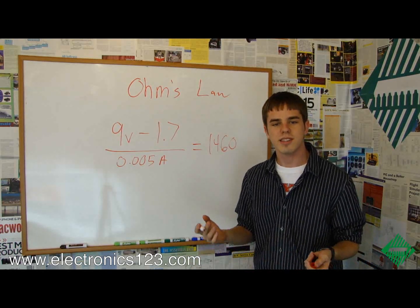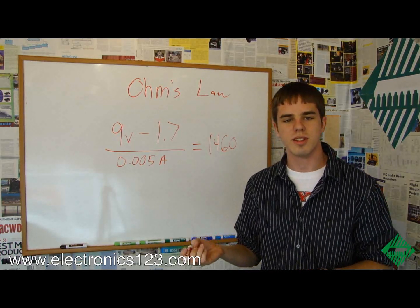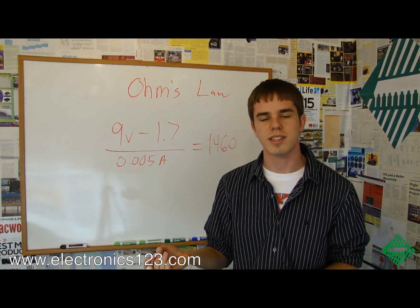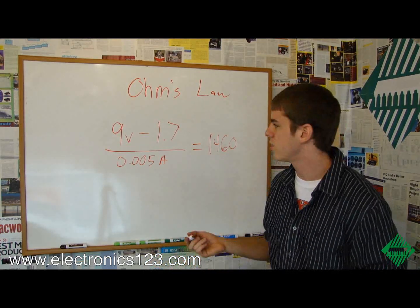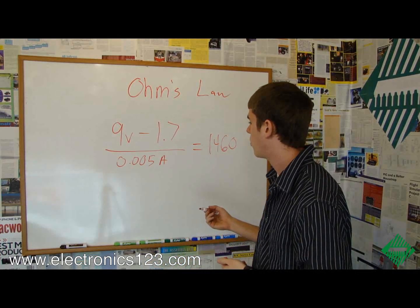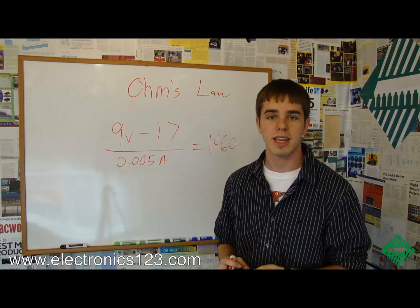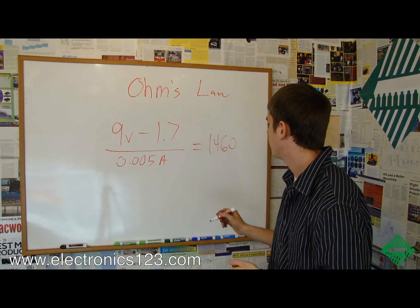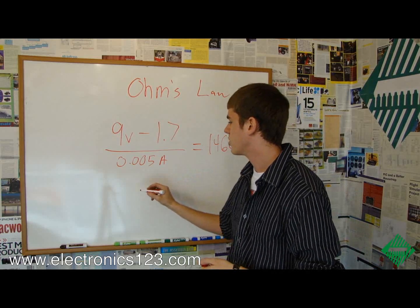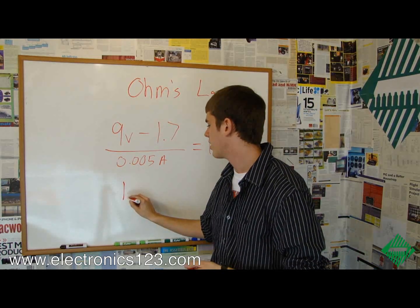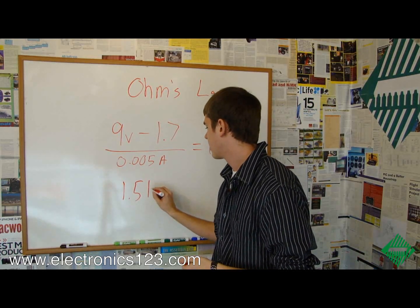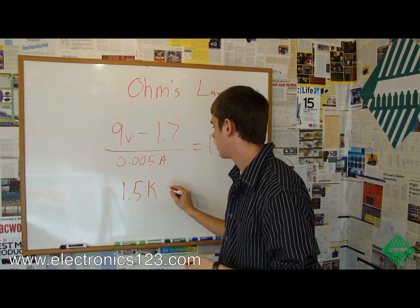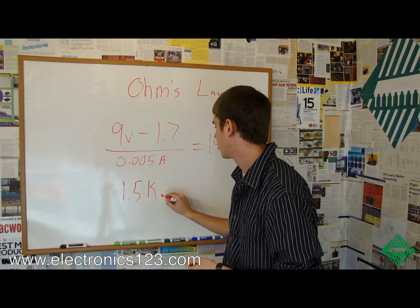Now, there isn't exactly a resistor that's 1,460 Ohms, but there is something that's close — 1.5K, or 1,500 Ohms.